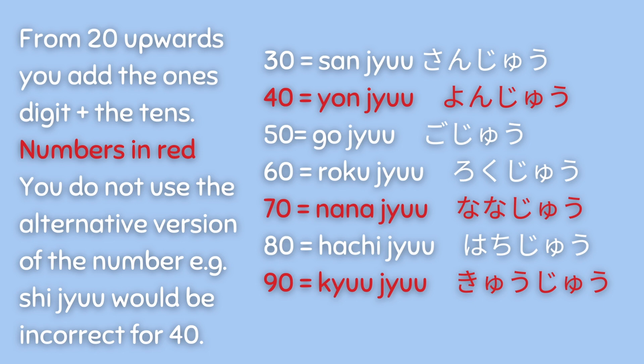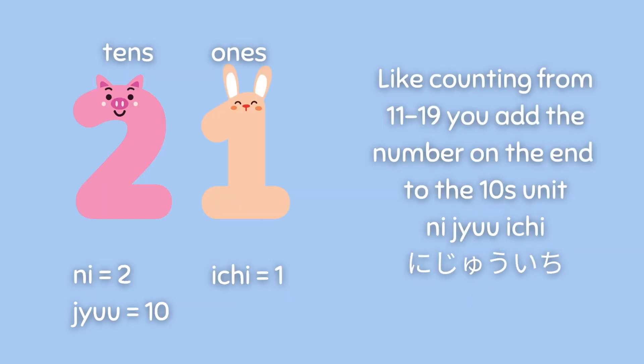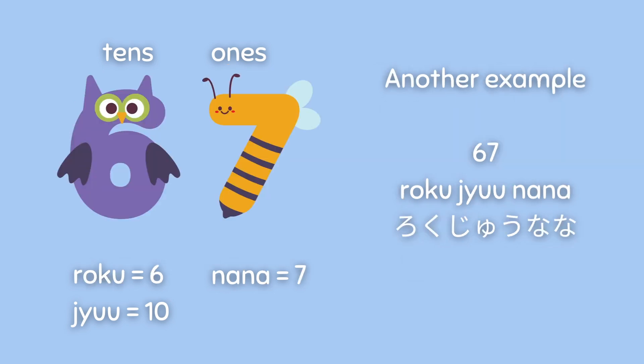This is really important to be aware of. Some more examples: twenty-one would be 二十一, and another example is 六十七, which is six tens, seven.